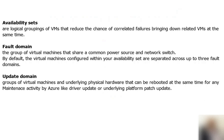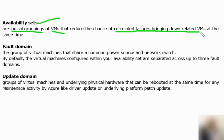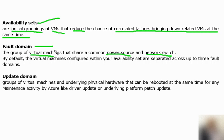We have three definitions to understand. First is the Availability Set, which is a logical grouping of virtual machines where correlated failure brings down related virtual machines at the same time, reducing failures together. The second is Fault Domain — a group of virtual machines that share a common power supply and network switch.